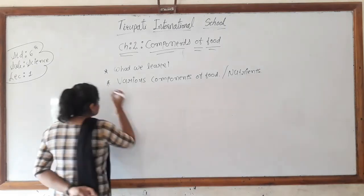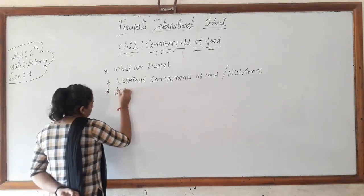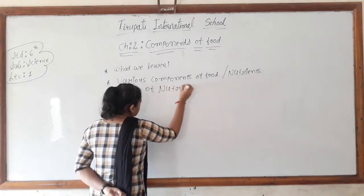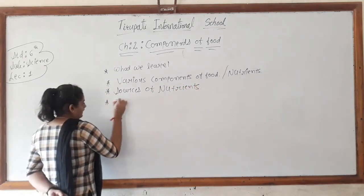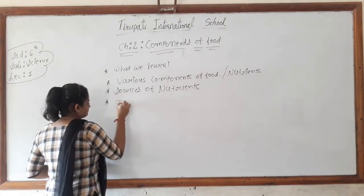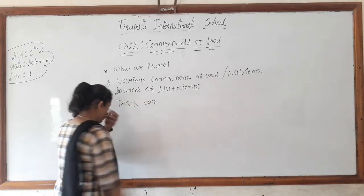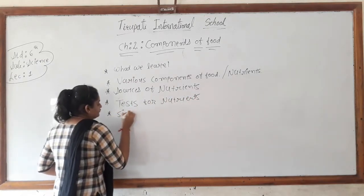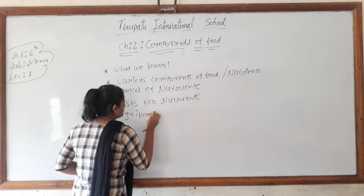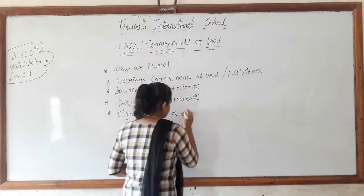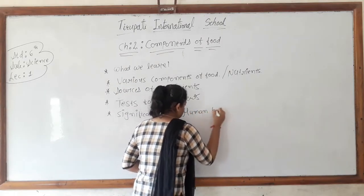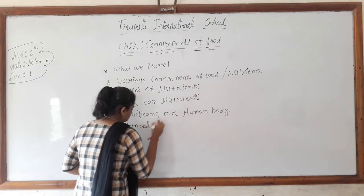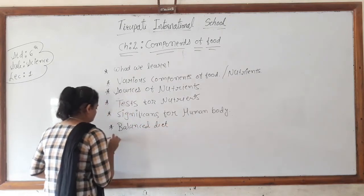In this chapter, we will cover the following topics: sources of nutrients, tests for nutrients, significance for the human body, balanced diet, and deficiency.